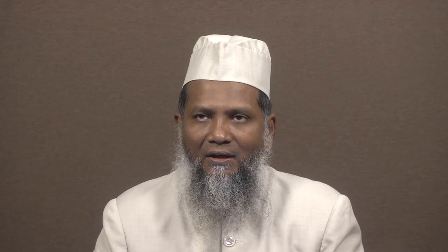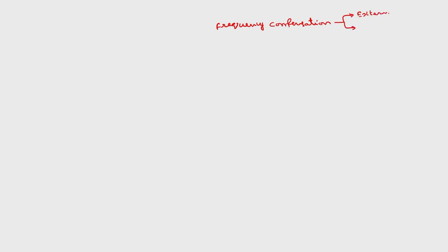To avoid instability in the operational amplifier, we can provide some sort of frequency compensation. This frequency compensation is of two types: one is external and another is internal. We will discuss frequency compensation in the next lecture.